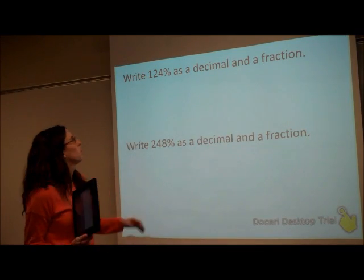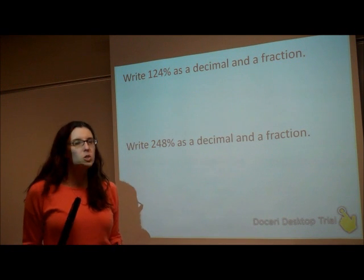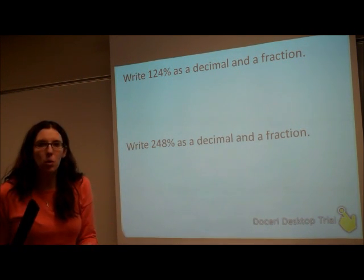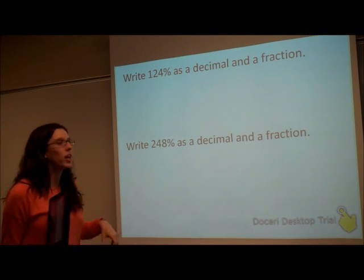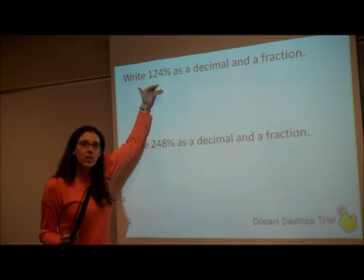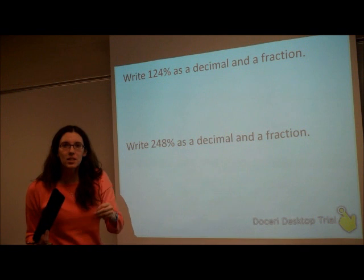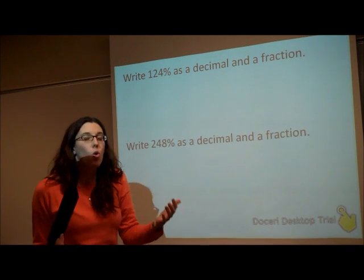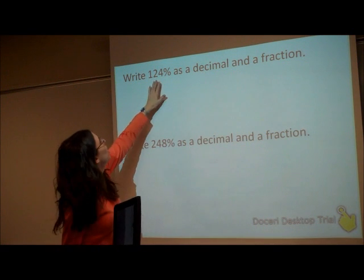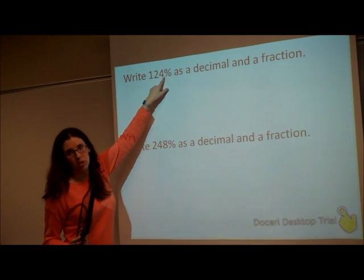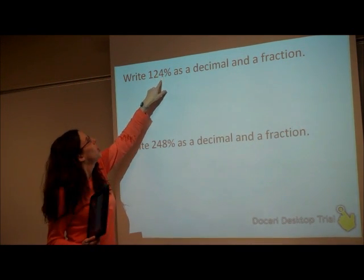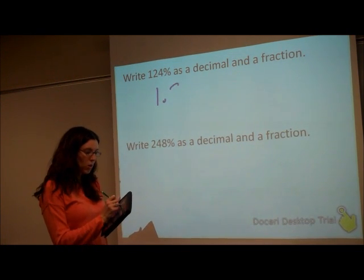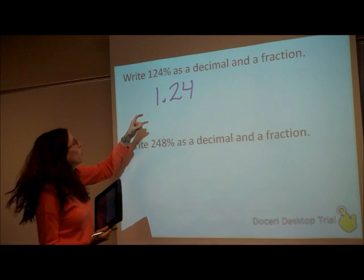Now let's look at these problems. It says: write 124% as a decimal and a fraction. This is basically what we've been doing before, just with regular fractions. If you are given a percent and need to write it as a decimal, you move your decimal place two places to the left, or you divide by 100. So with 124%, the decimal is after the four, so we move it two places to the left. As a decimal, it's 1.24.